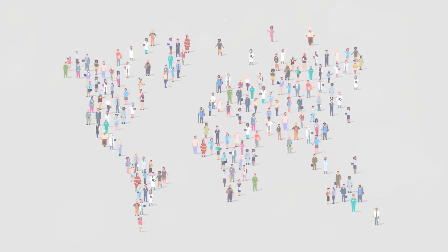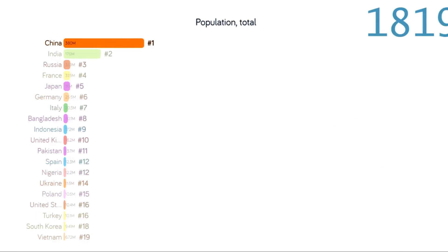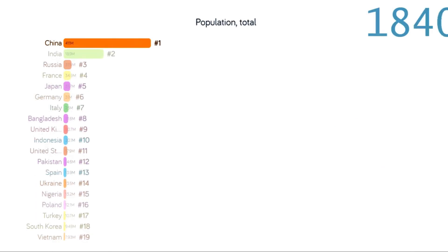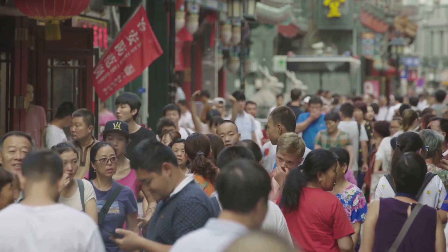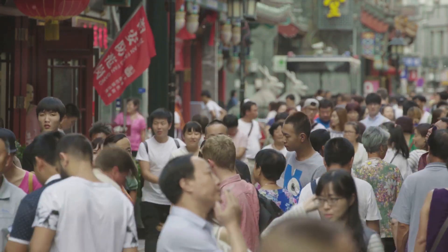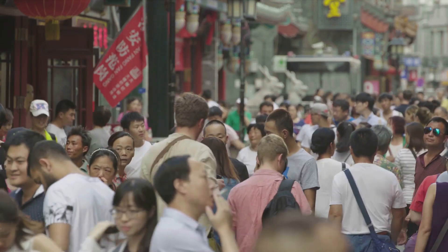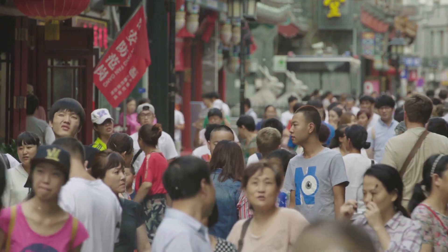Let's zoom in and examine the population distribution within some of the world's most populous countries, starting with China, the most populous nation on earth. The majority of people are concentrated in the eastern coastal regions, where major cities like Beijing, Shanghai, and Guangzhou are located — China's economic powerhouse, bustling with industry and commerce. However, the western part of the country, with its rugged mountains and vast deserts, is sparsely populated.